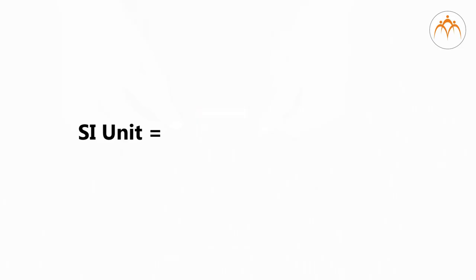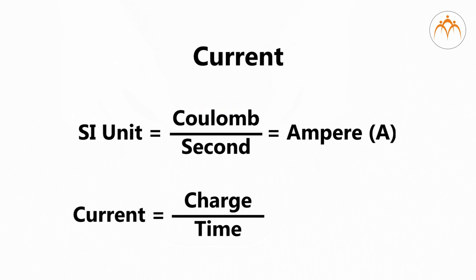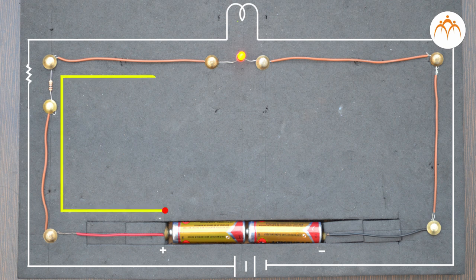The SI unit of current is coulomb per second, or ampere, denoted by capital A. Current is the rate at which charges pass through a point. Current is a scalar as both charge and time are scalar quantities. Conventionally, the direction of current is from the positive battery terminal to the negative battery terminal.